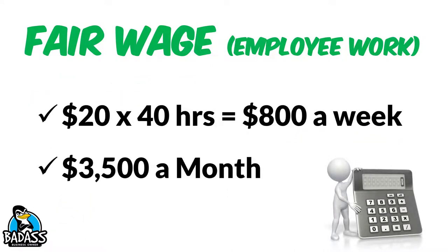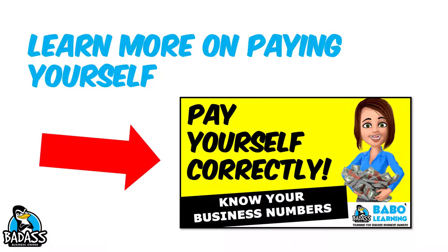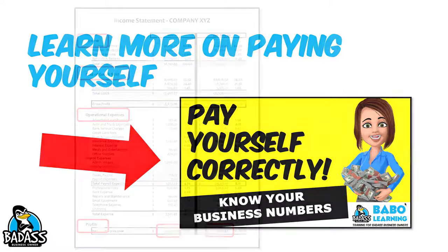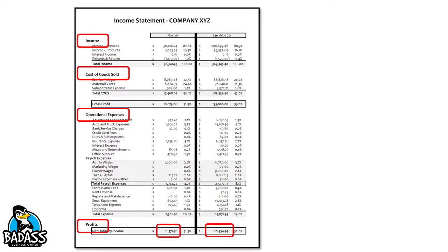Basically it looks something like this for most people. They might say, I'm gonna pay myself $20 an hour for 40 hours — about $800 a week for the work that I do as an employee — or take a flat wage of $3,500 every single month, and you're gonna put it on your profit and loss statement. If you wanna learn more about paying yourself correctly, check out that separate video I did on that topic. But today you wanna know more about your profits.